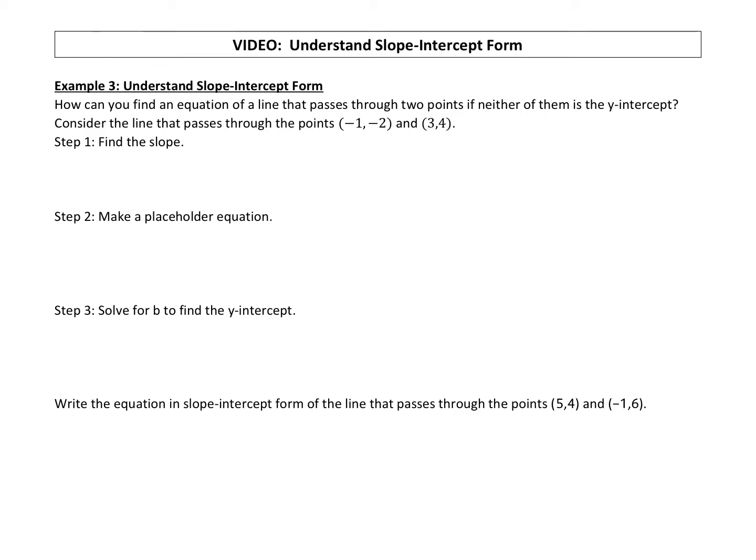All right, so we're going to work on understanding slope-intercept form. Our question is, how can you find an equation of a line that passes through two points if neither of them is the y-intercept? So let's see how we can do that. First thing you want to do is find the slope. You always need the slope of your line.